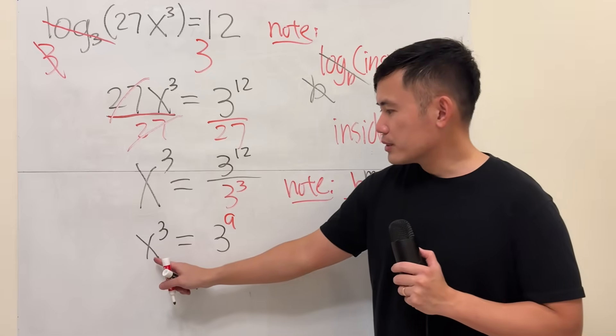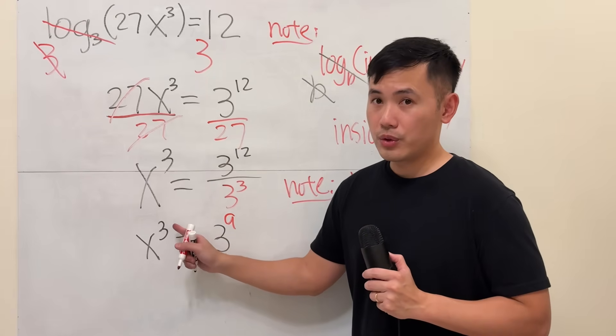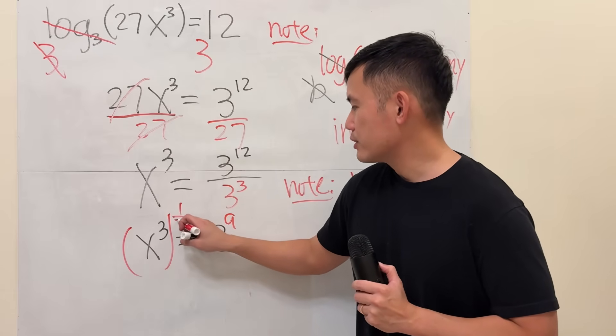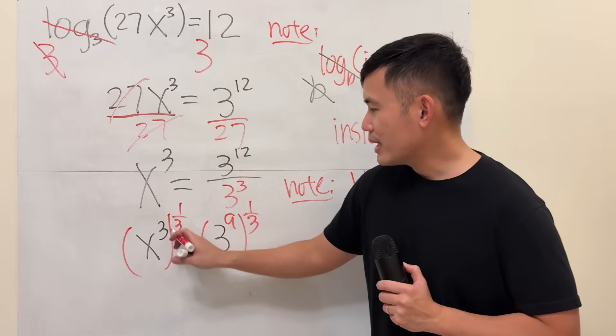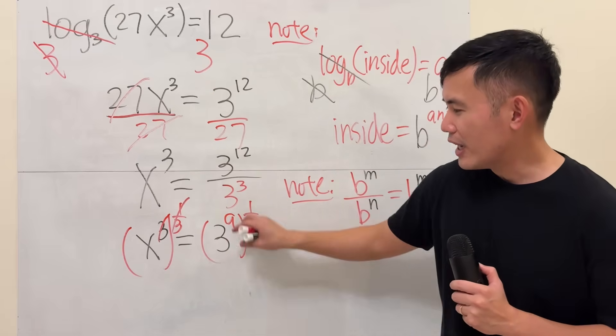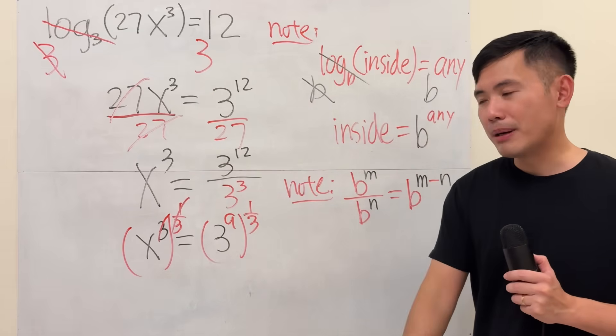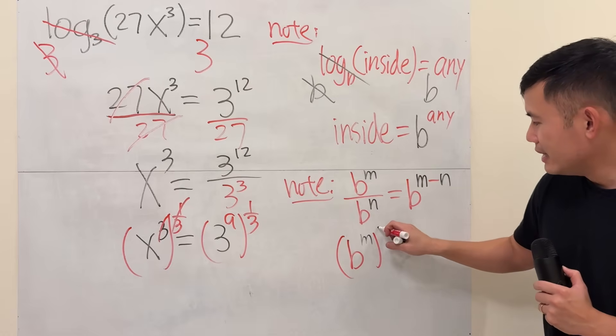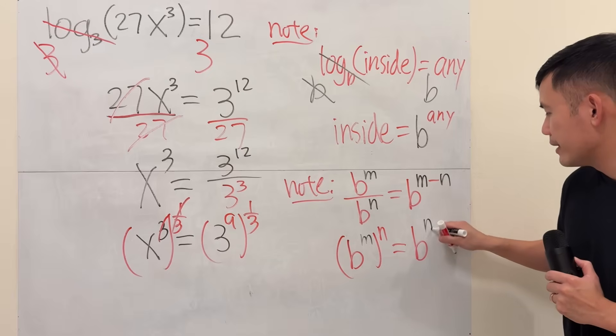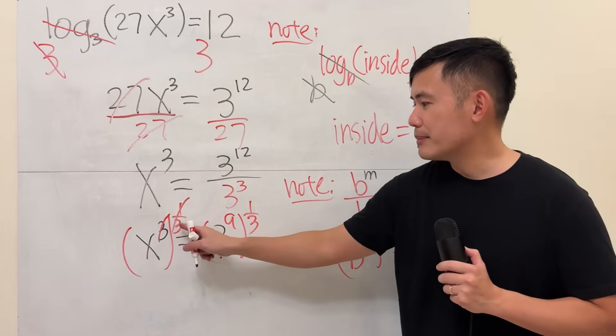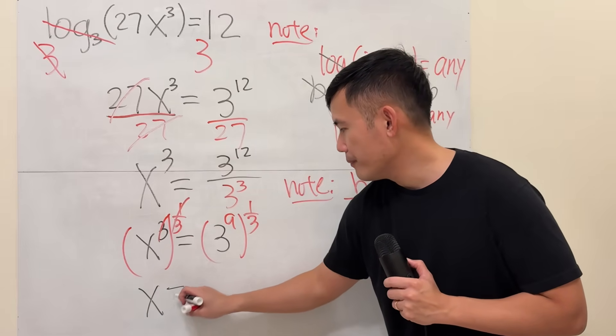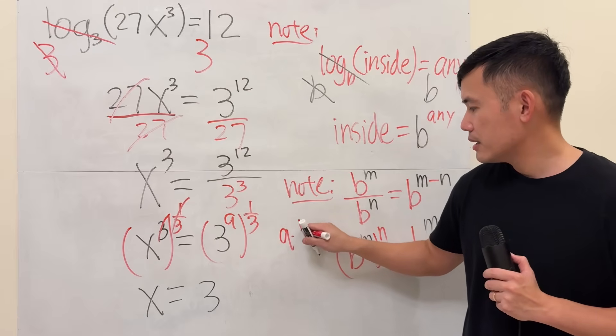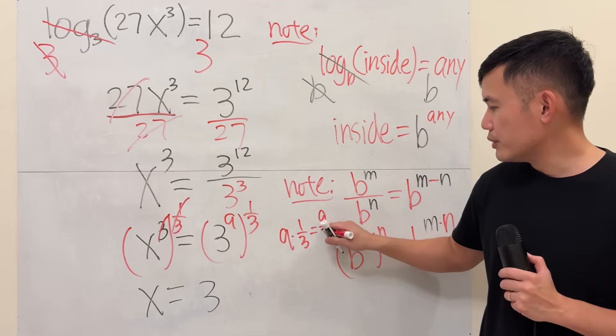At the end, we are going to solve for x, and this is the 3rd power. So we will take the cube root on both sides. Or you can also look at this side, raise both sides to the 1/3rd power. So that when you do this times that, they cancel. When you have a power to a power, you multiply the powers. So that's another note. b to the m raised to the power n, you multiply them. So that's b to the m times n. 3 times 1/3rd is just 1. So you get x to the 1st power. And then you get 3. 9 times 1/3rd is 9 over 3, which is just 3.